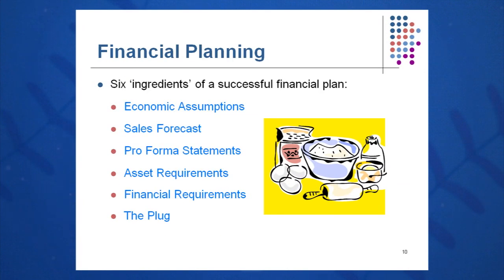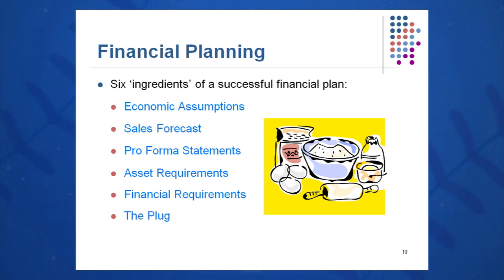In a financial plan there are six key ingredients. First are economic assumptions — typically provided by the treasury group near the CFO's office — including interest rates, and in the case of a chemical company, the price of oil and gas. General economic assumptions include GDP growth and how fast the economy is expected to grow, from which other predictions follow. Second, a sales forecast — you go to the marketing department, discuss volumes and pricing, and get price and volume decisions from marketing. They commit to those figures, especially for year one, since their performance may hinge on meeting that sales forecast.